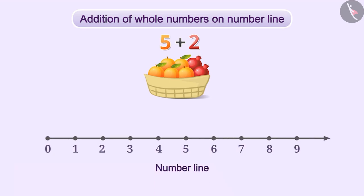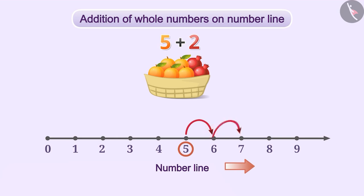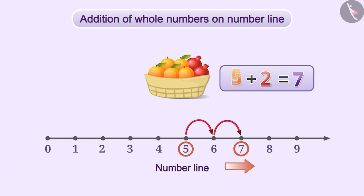First number is five, so we start with five on the number line. Since we have to add two to it, we will take two steps towards the right, from five to six and six to seven. We will use arrows pointing towards the right direction. The last arrow points to seven. Thus, the sum of five and two gives seven. That is, five plus two is equal to seven.